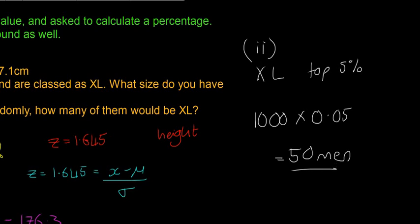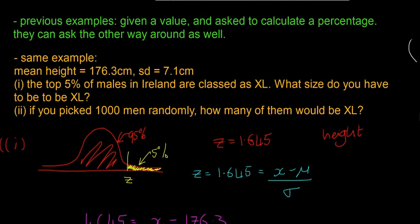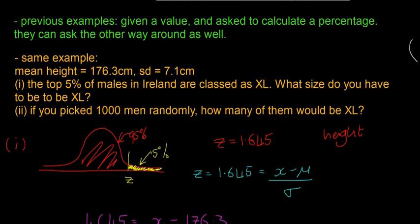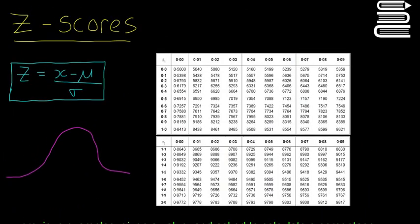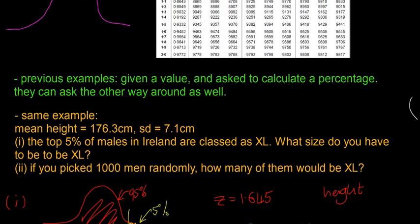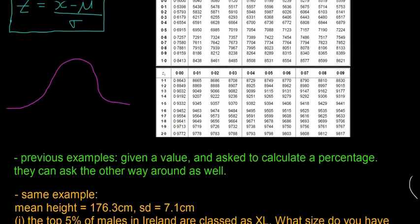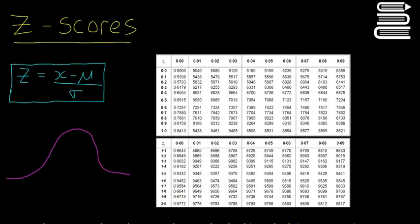So hopefully those two questions make sense. Those are pretty much between this and the last two videos, those are most of the questions you're going to see on Z scores. Those are the most common questions. They're pretty much all the questions actually. So hopefully they all made sense. If they didn't, ask questions in the comments and we'll answer them. But that's it for direct Z scores for now. We're going to look at the central limit theorem next. So if you liked the video, like and subscribe, share it with your friends. We'll see you next time. Thanks for watching.